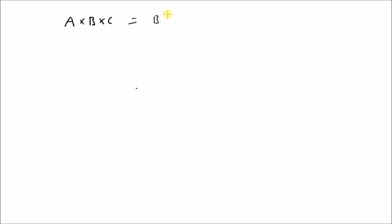Hello, welcome. In this short video, let us look at the proof for what is known as the BAC-CAB rule in vector algebra. That is, given three vectors a, b, and c, we have the cross product a cross (b cross c) is equal to b times (a dot c) minus c times (a dot b). A cross product of three vectors can be written as a weighted combination of two vectors, where the weights are given by the dot products between vector a and c, and vector a and b.